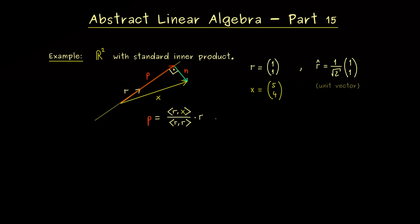Hence we can reformulate the whole formula with the unit vector r-hat. And what we get is really simple. We get r-hat in the inner product with x times r-hat. So you see r-hat does the same job as r, but because it has length 1 this formula looks much nicer because we don't need to divide by the length squared anymore.